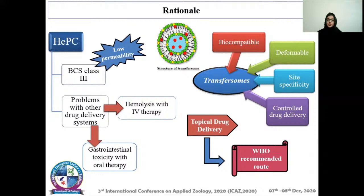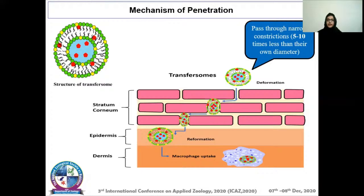The driving force for the transport of transethosomes is the difference in water content due to the osmotic gradient between dry skin and hydrated epidermis. They can pass through narrow constrictions five to ten times less than their own diameter. The formulation we developed had a particle size less than 200 nm and negative zeta potential due to the negative charge on the lipid. TEM analysis shows the particles are spherical in shape and homogeneously distributed.